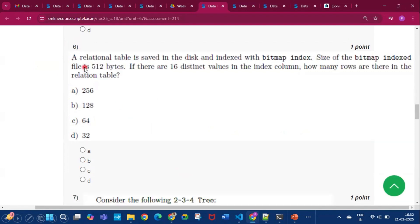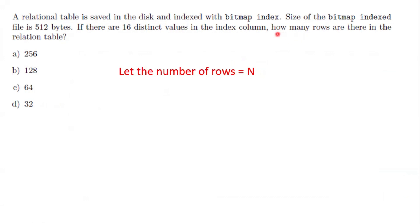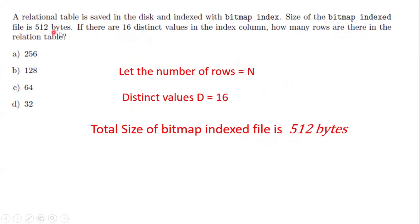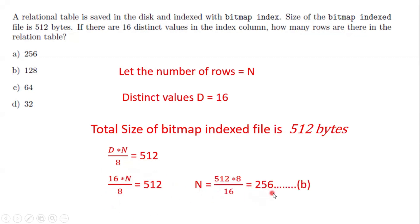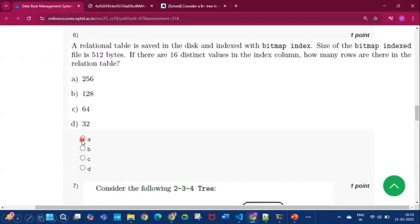Question 6: A relational table is indexed with a bitmap index of total size 512 bytes, with 16 distinct values in the index column. Using the formula d × (n / 8) = total size, where d = 16: 16 × (n / 8) = 512, so n = 512 × 8 / 16 = 256 rows. Option A (256) is the answer.